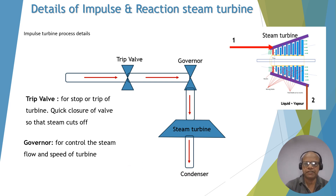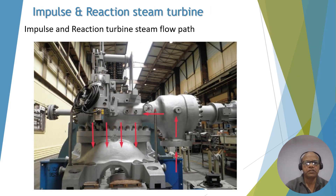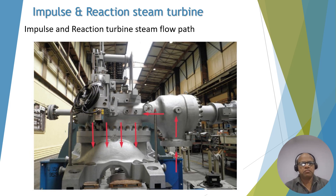You can see this is the impulse-reaction turbine. Steam comes here, this is the trip valve or quick closing valve, then it comes to the governor, and finally goes to the casing and housing of the turbine where it impinges on the rotating blades or moving blades and power is generated.